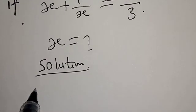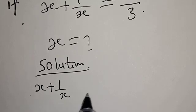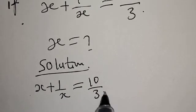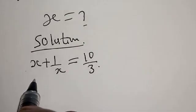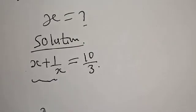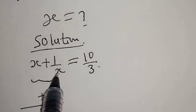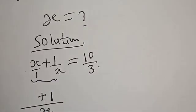We have x plus 1 over x is equal to 10 over 3. Let's consider the left-hand side by finding the LCM. The LCM of this is x, so we have x squared plus 1, all over x.